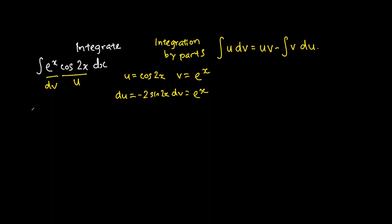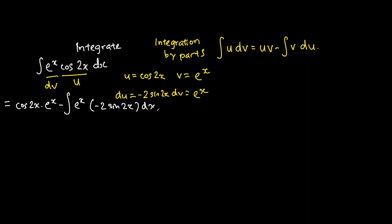Now we can apply the integration by parts formula. This is equivalent to uv, so that will be cosine 2x times e to the power of x, minus the integration of v du, which is e to the power of x times negative 2 sine 2x dx. Rearranging, negative times negative gives positive, so that will be plus 2 integration of e to the power of x sine 2x dx.